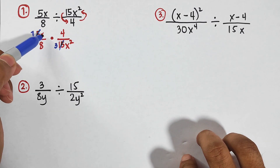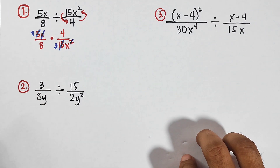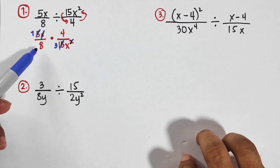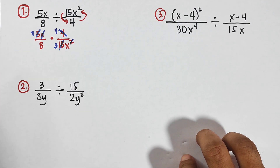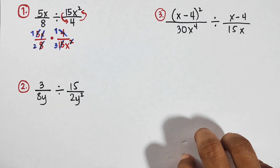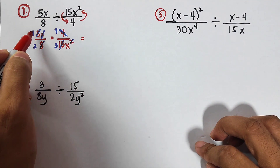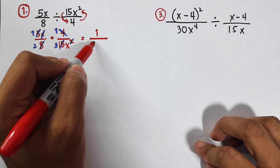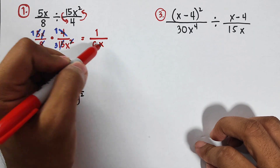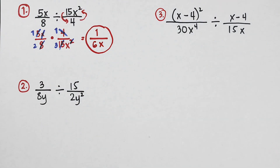Next, for the variable x: we have x and x squared, so x cancels and x squared becomes x. We can also simplify 4 and 8 — their GCF is 4, so 4 becomes 1 and 8 becomes 2. Now multiply what remains: 1 times 1 is 1 over 2 times 3 which is 6, and we still have variable x. So the quotient is 1 over 6x.